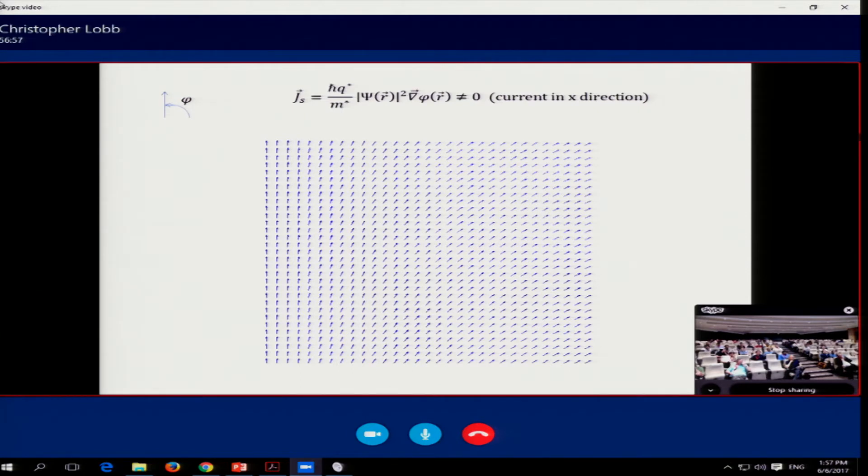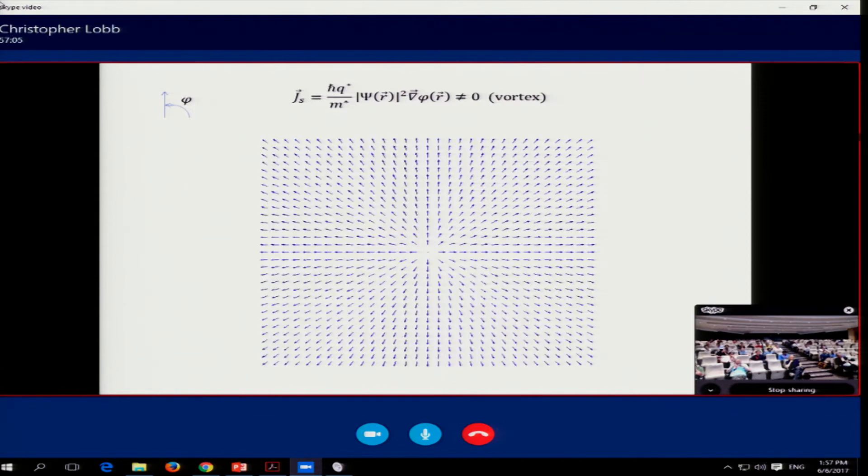But anyway, you can see here that there's a gradient in the x-direction, and this corresponds to a current flowing in the x-direction. No questions about that. Here's a picture of something that's very important in superconductors. And as you all know, very important in the Kosterlitz-Thouless transition. This is a picture of a vortex. The center of the vortex is in the center of the diagram. And if you look at the way the gradients in the phase go, you see that there's a circulating current going around that center.